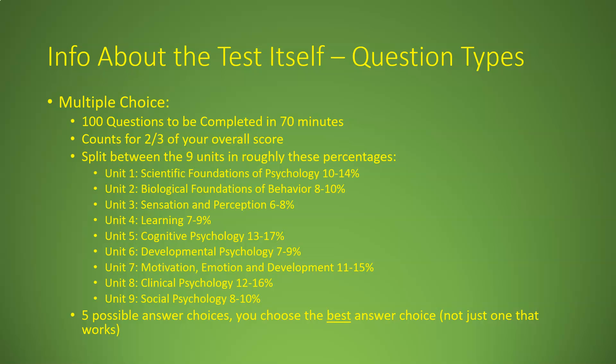Unit breakdowns: Unit 1 (Scientific Foundations of Psychology) 10–14%; Unit 2 (Biological Foundations/Brain) 8–10%; Unit 3 (Sensation and Perception) 6–8%; Unit 4 (Learning) 7–9%; Unit 5 (Cognitive Psych) 13–17% — the biggest unit; Unit 6 (Developmental) 7–9%; Unit 7 (Motivation, Emotion, and Personality) 11–15%; Unit 8 (Clinical Psych) 12–16% — the second biggest; Unit 9 (Social Psych) 8–10%. Focus especially on cognitive psych, clinical psych, and motivation/emotion/personality.